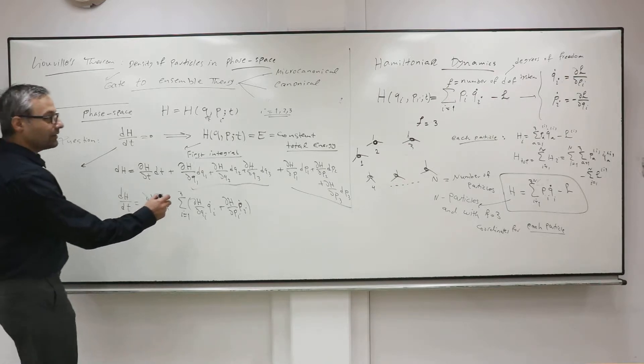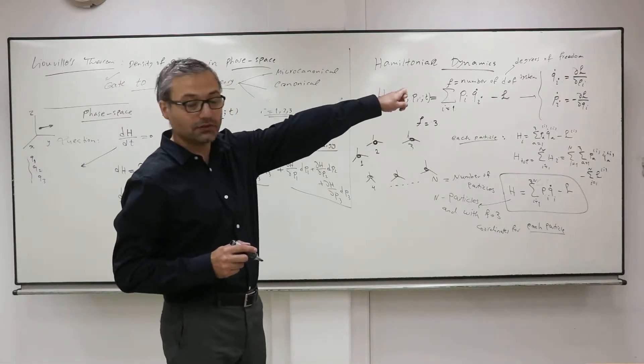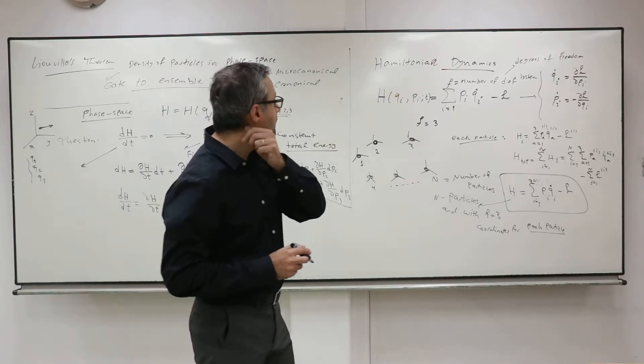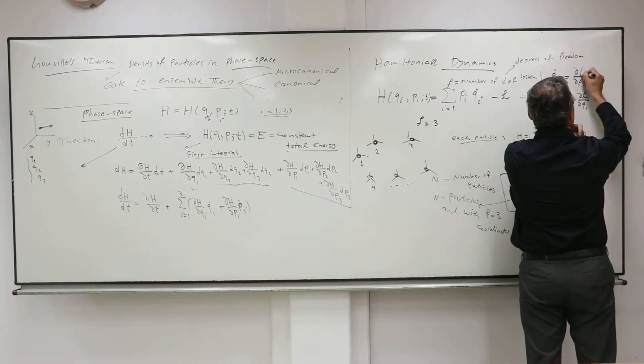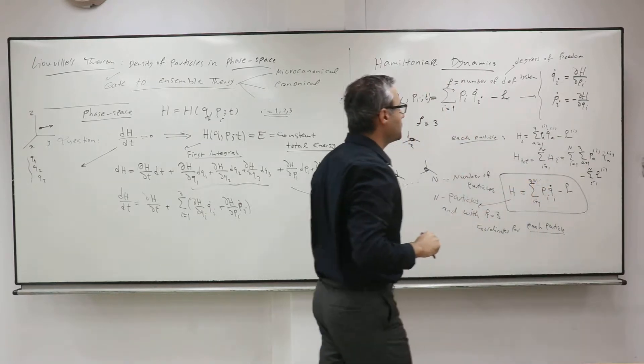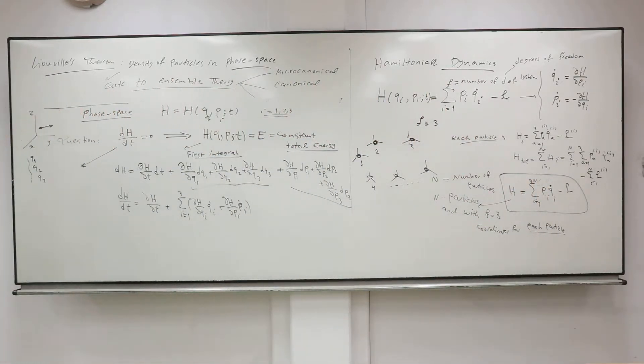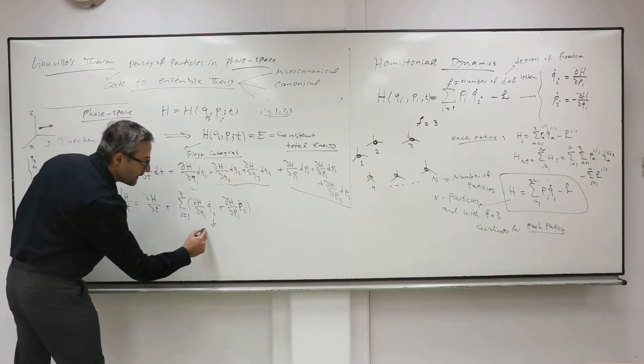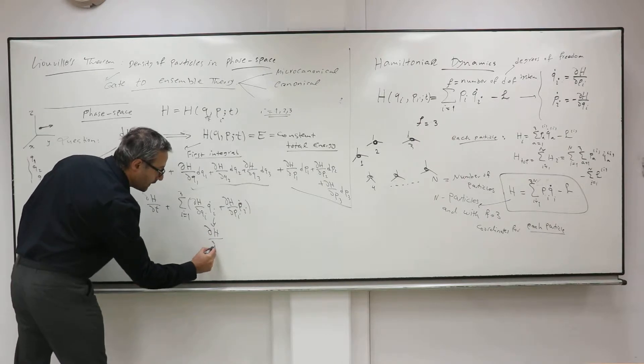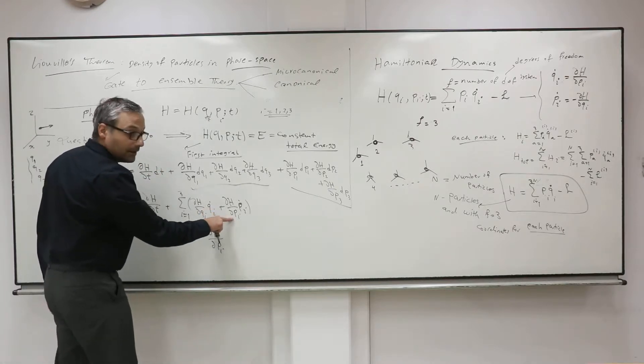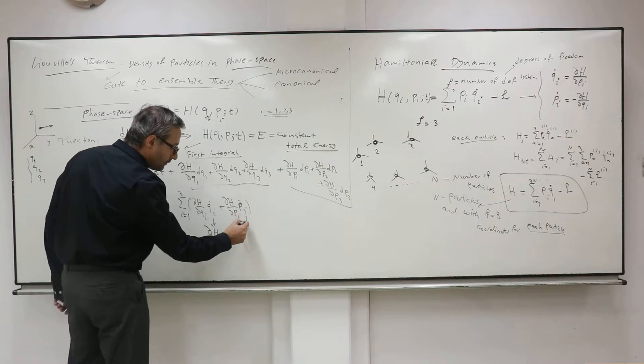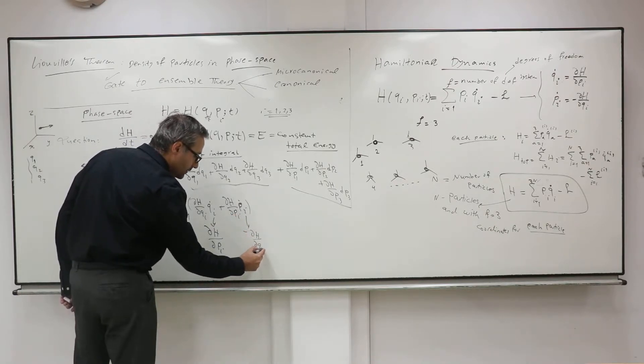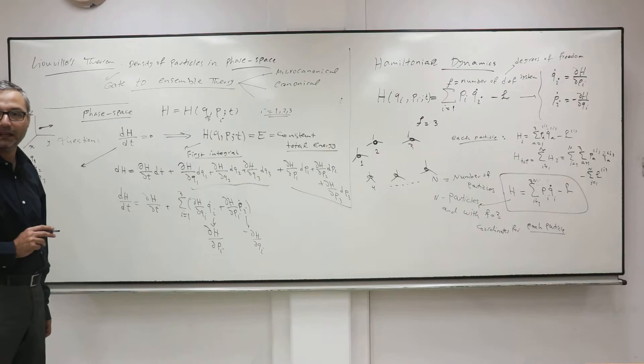And thanks to the Hamilton equations, you said thanks to the Hamilton equation, Q̇ is partial derivative of the—sorry. Here should be Hamiltonian because we are writing Hamilton equations. Thanks to the Hamilton equation, instead of Q̇, you can replace that by partial derivative of H with respect to Pi. And you can define that minus partial derivative with respect to Qi. And look at that, what happened?